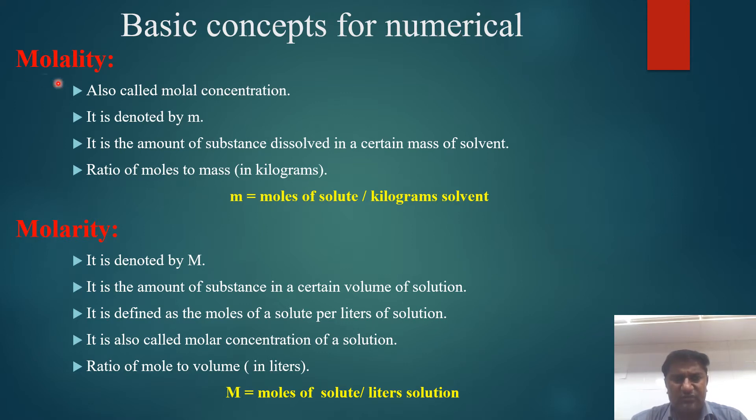What is molality? Molality is also called molal concentration. It is denoted by small m. It is the amount of substance dissolved in a certain mass of solvent. It is the ratio of moles to mass in kilograms. Its formula is m = moles of solute / kilograms of solvent.